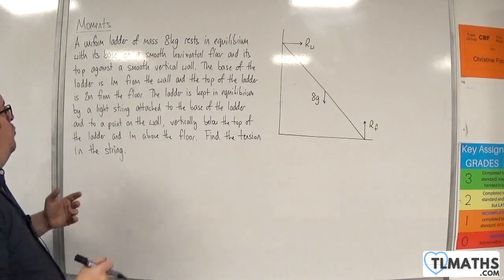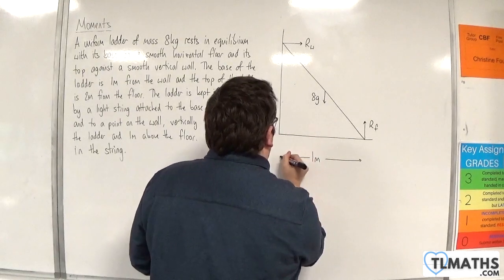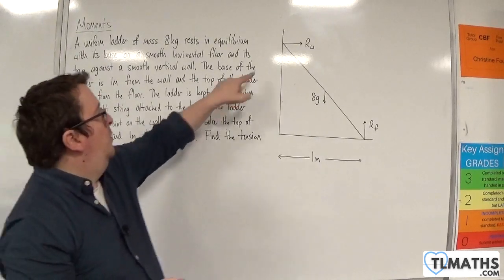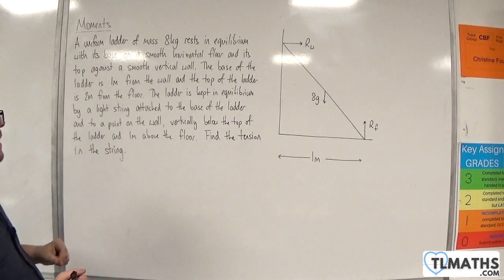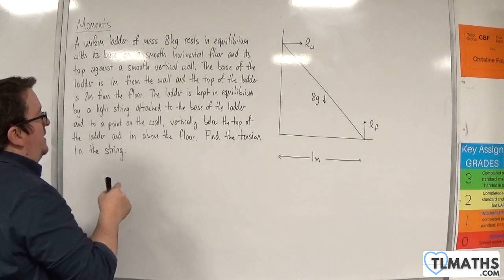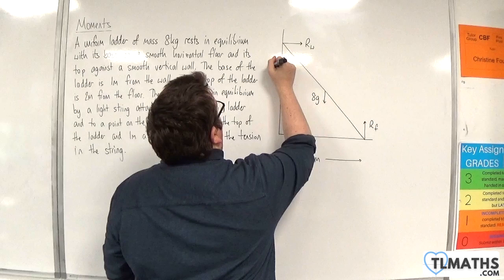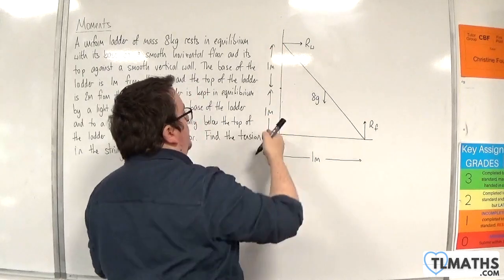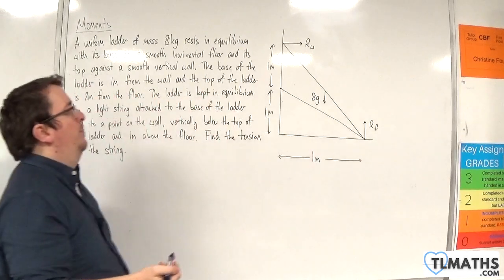The base of the ladder is 1 metre from the wall, so this distance is 1 metre. And the top of the ladder is 2 metres from the floor, so that is 2 metres. The ladder is kept in equilibrium by a light string attached to the base of the ladder and to a point on the wall, vertically below the top of the ladder and 1 metre above the floor. So it's attached to a point here where that is 1 metre. That then has to be 1 metre if that whole distance is 2 metres, and that is connected to the base of the ladder.